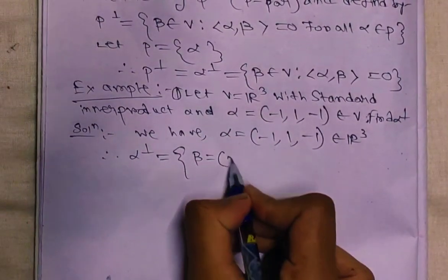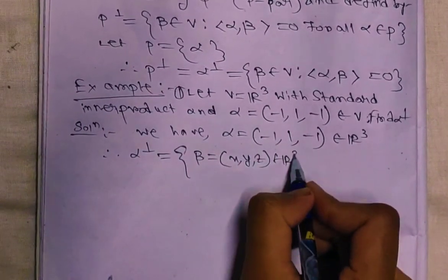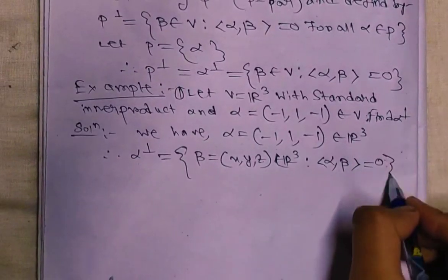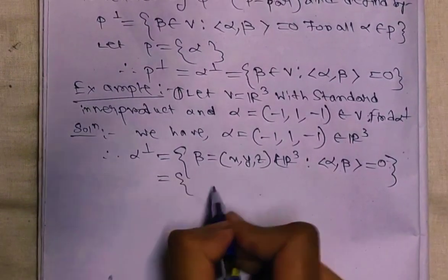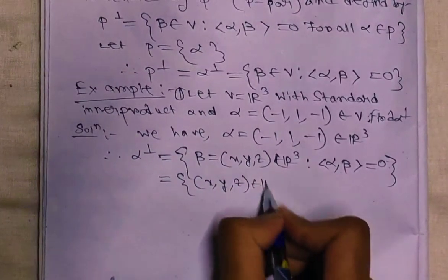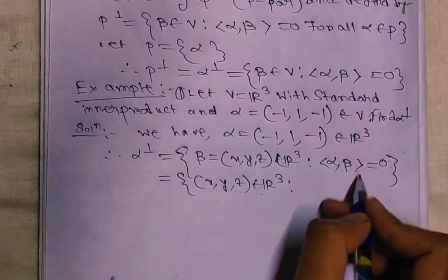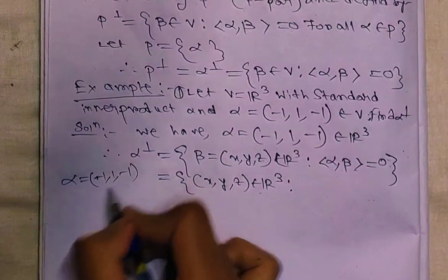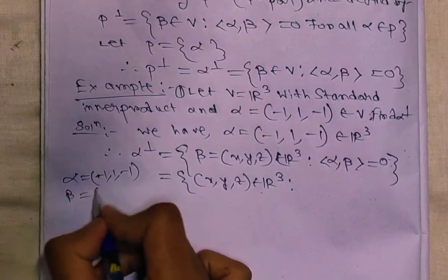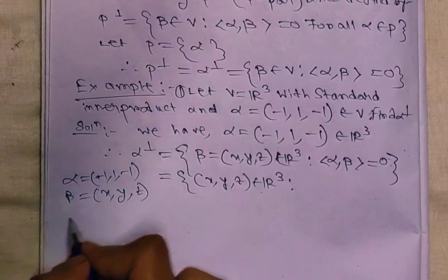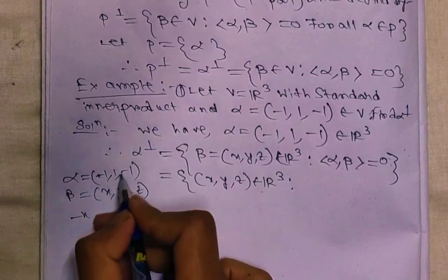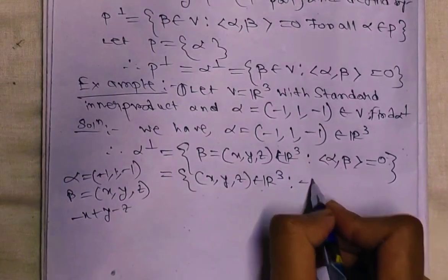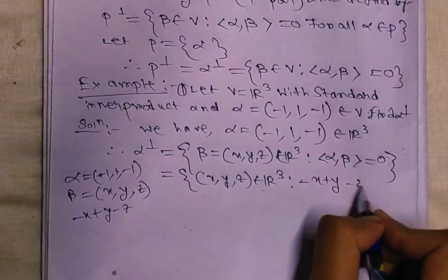Therefore alpha⊥ equals the set of beta equals (x, y, z) in R³ such that the inner product of alpha and beta equals zero. We have alpha equals (-1, 1, -1) and beta equals (x, y, z), so the inner product of alpha and beta equals -x plus y minus z.